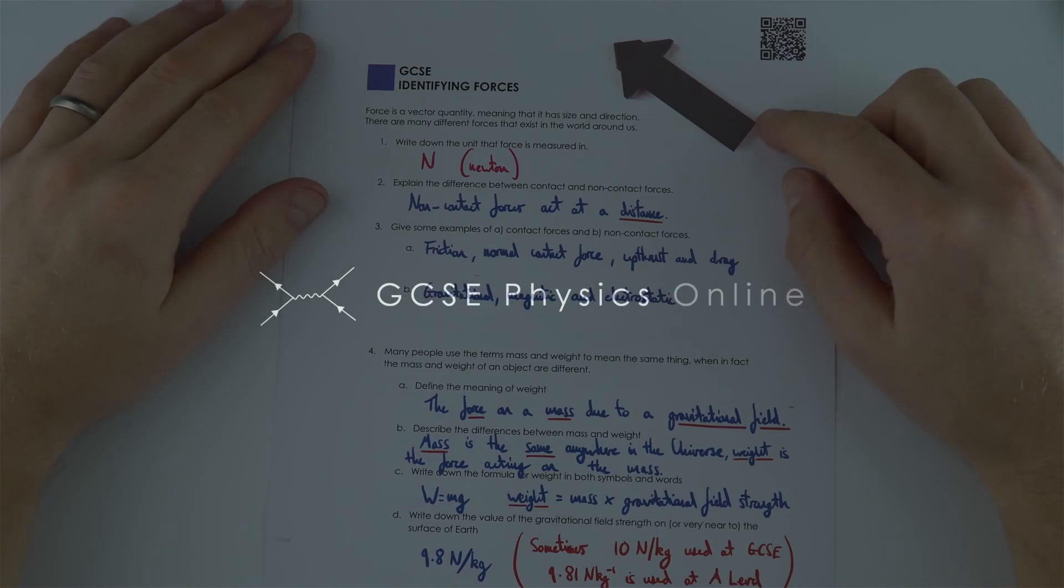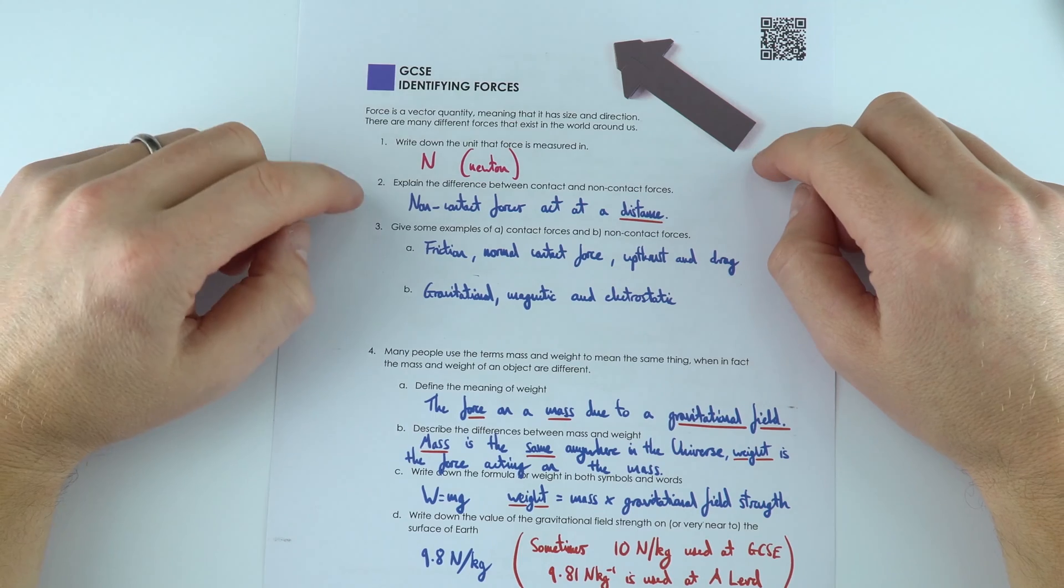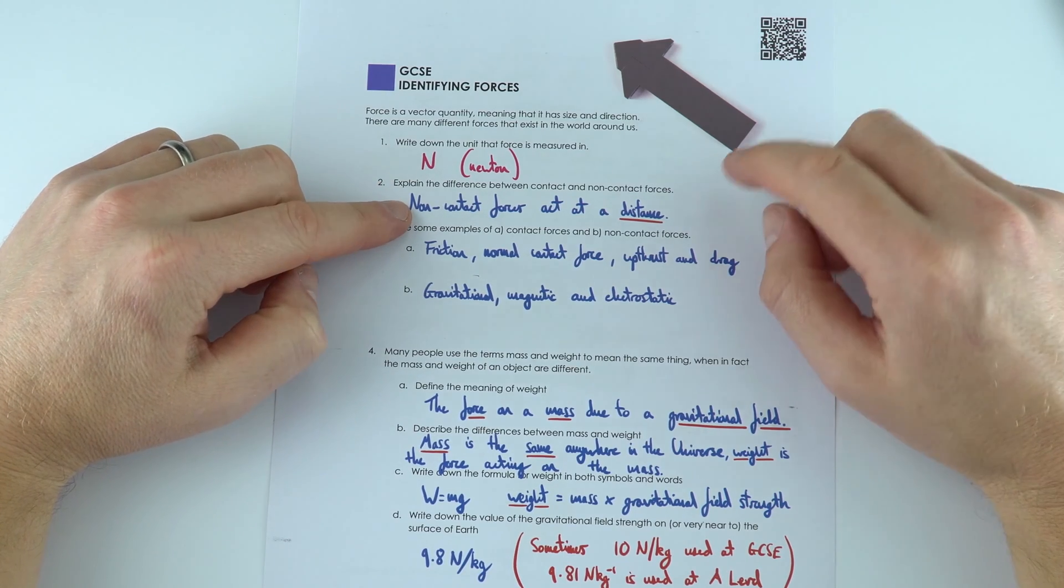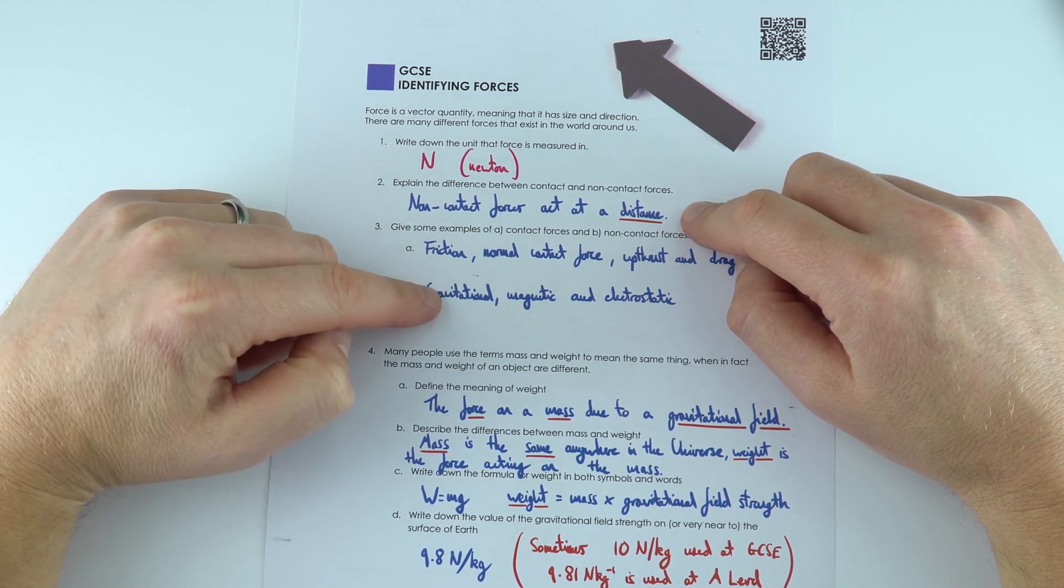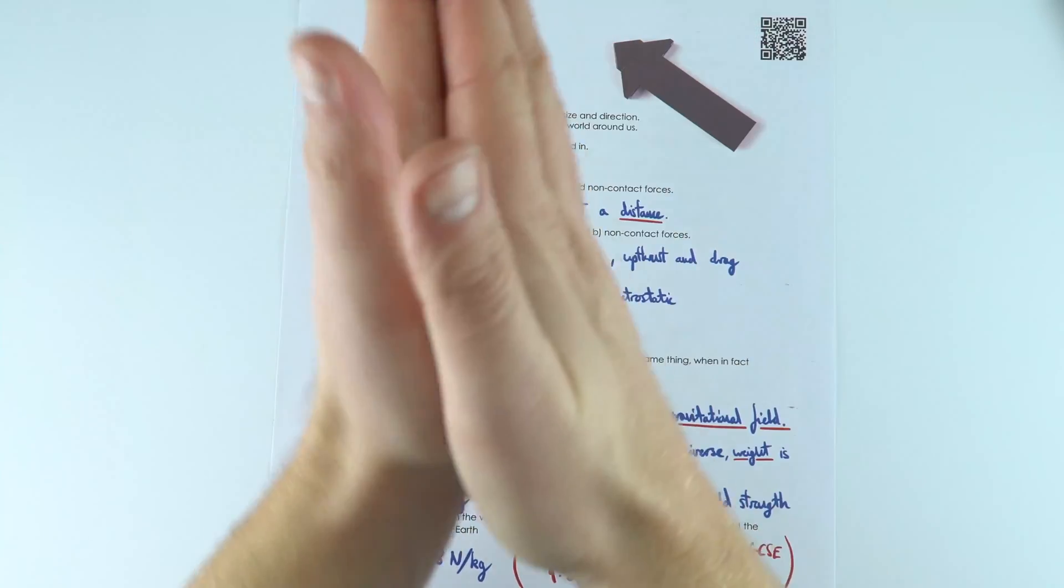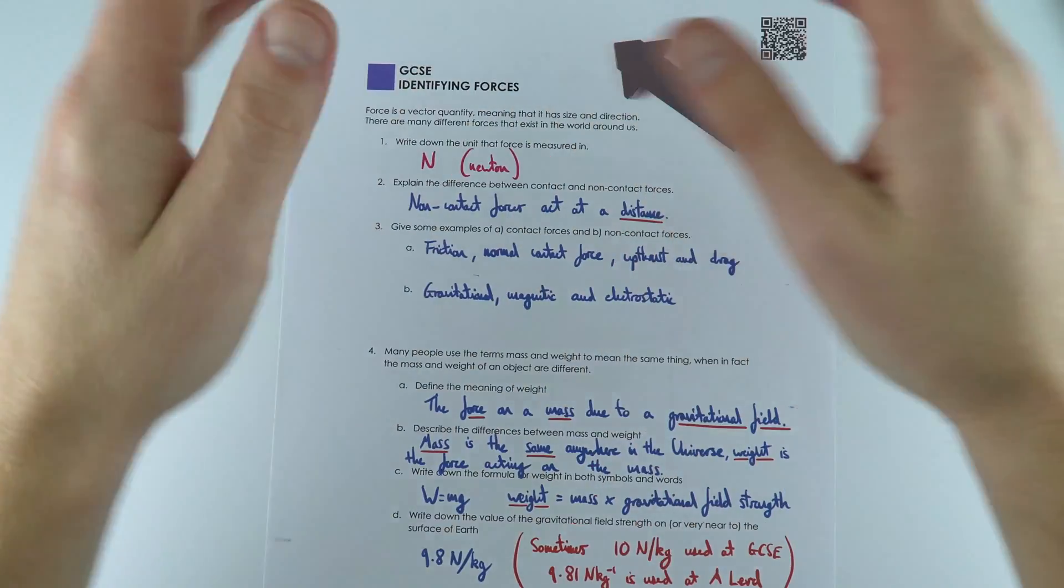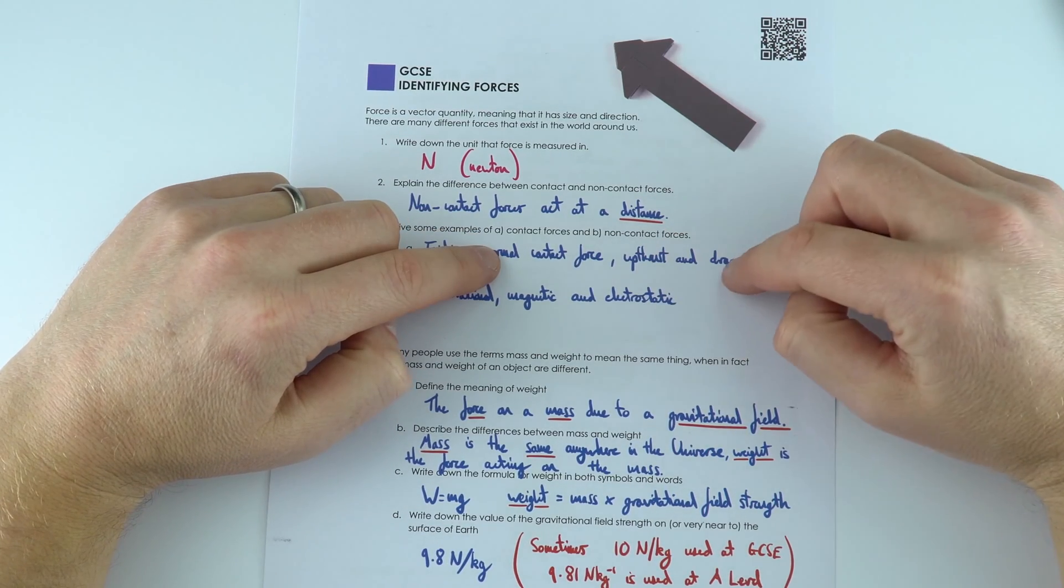This worksheet introduces forces, which we measure in newtons, and we've got two different classifications. We've got non-contact forces that act at a distance, including the gravitational force which causes weight, the magnetic and electrostatic force. Then we have other forces that need to be in contact, like friction, normal contact force, upthrust, and drag.